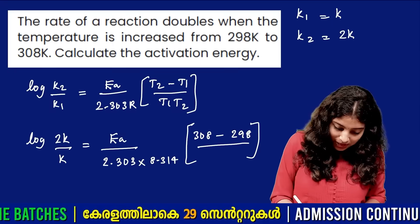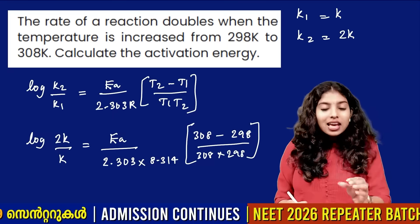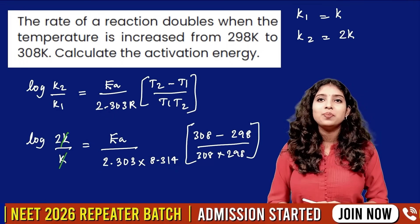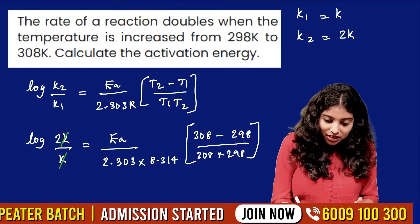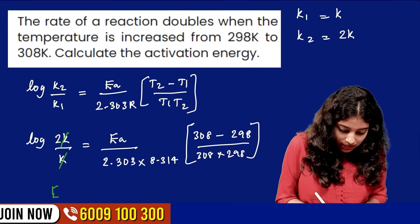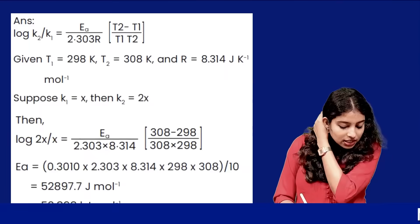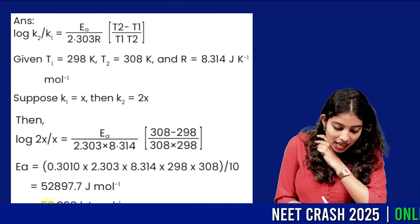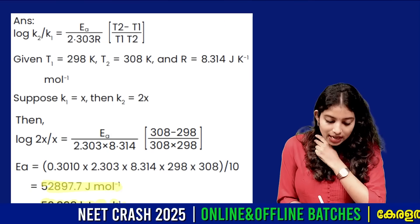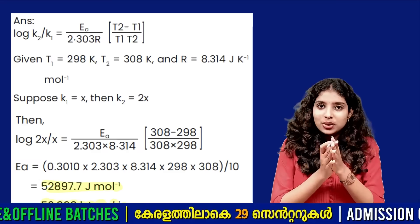Substituting 308 × 298 in the denominator and log 2 in the numerator, we solve for Ea. The value of Ea comes out to approximately 52.898 kJ per mol. That is the answer — simple substitution into the Arrhenius equation.